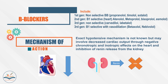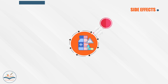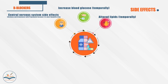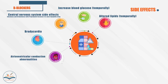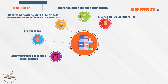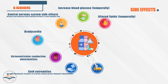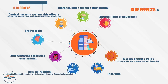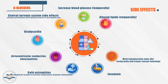Side effects of beta blockers include altered lipids, increased blood glucose, CNS side effects, bradycardia, atrioventricular conduction abnormalities, cold extremities, and insomnia. They mask hypoglycemia signs like tachycardia and tremor, except sweating.